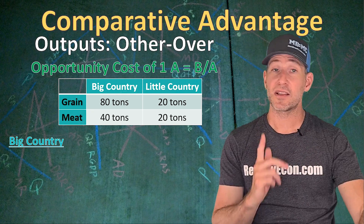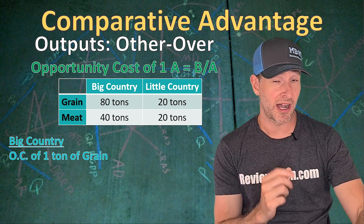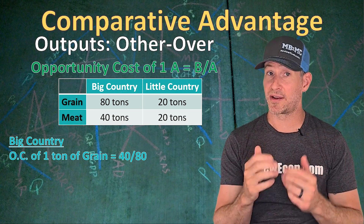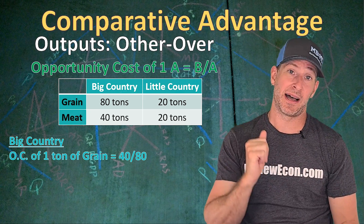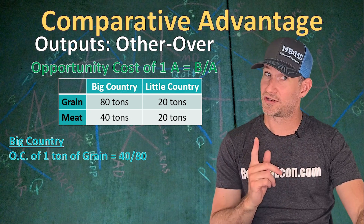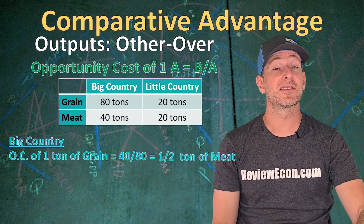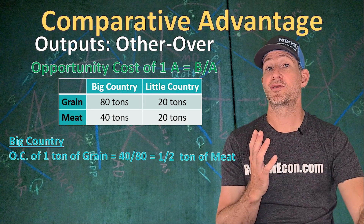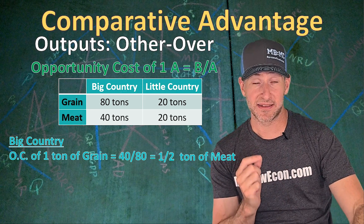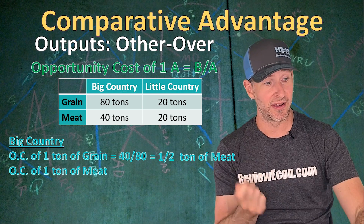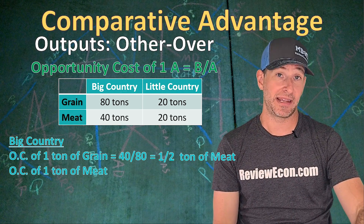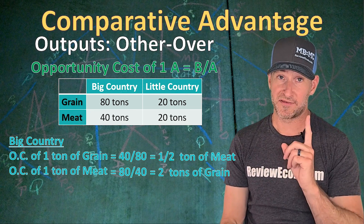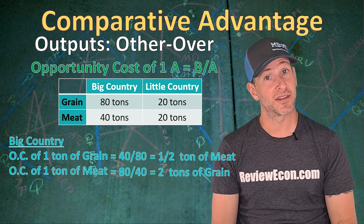Let's look at Big Country and their opportunity cost for producing grain. The opportunity cost of grain is the numbers we have for the other one — meat — 40 tons, divided by the numbers we have for grain, 80 tons. That reduces to half a ton of meat as the opportunity cost for producing one ton of grain. When Big Country produces one ton of meat, we take the numbers for grain, 80, divided by the numbers for meat, 40, giving us an opportunity cost of two tons of grain.